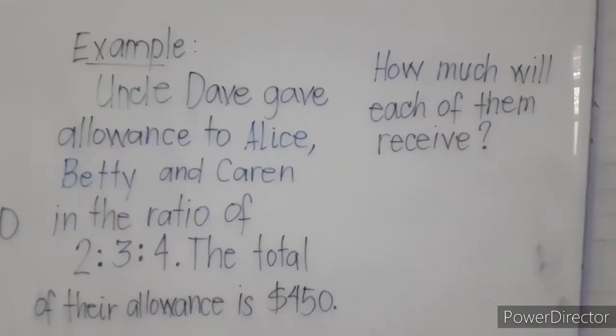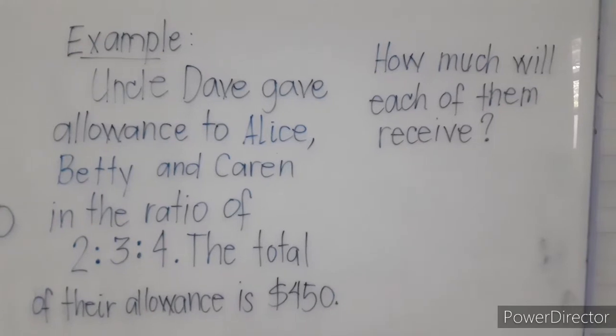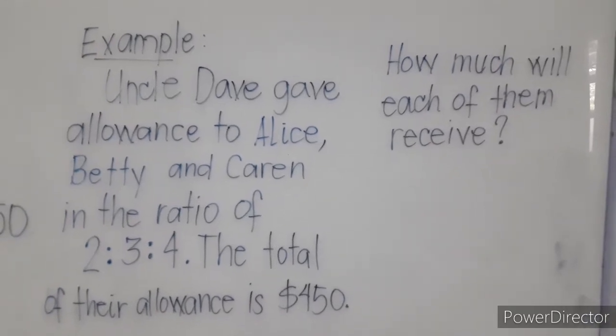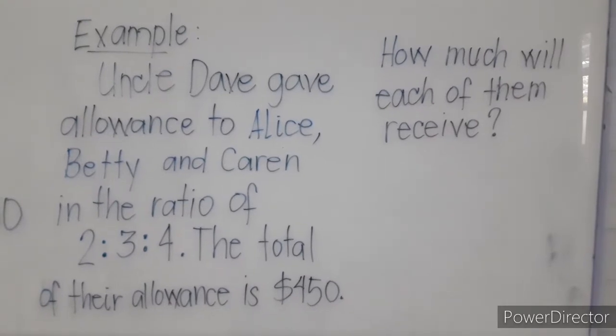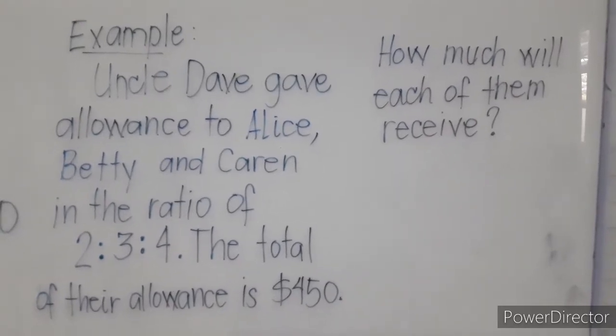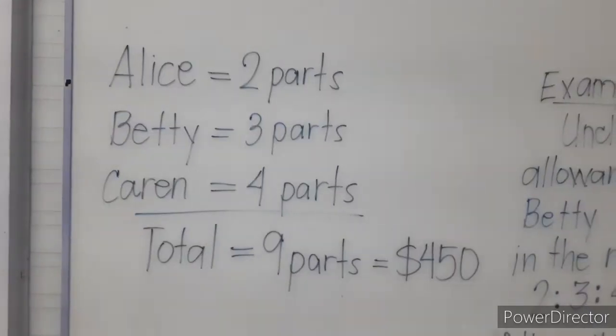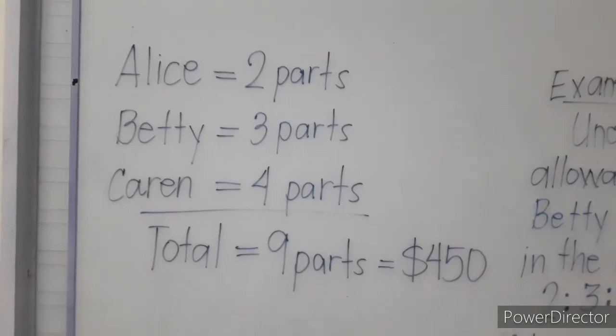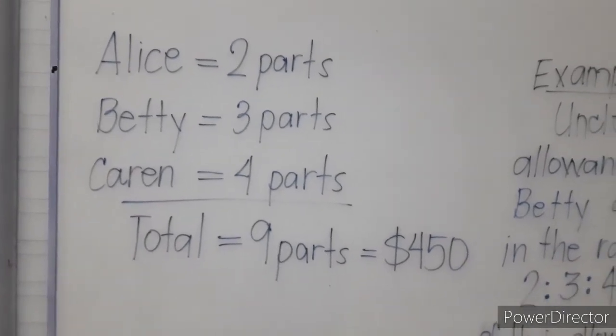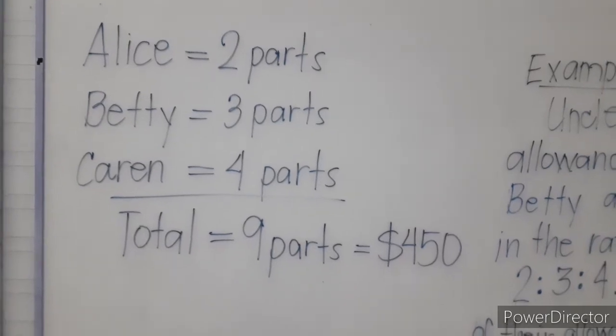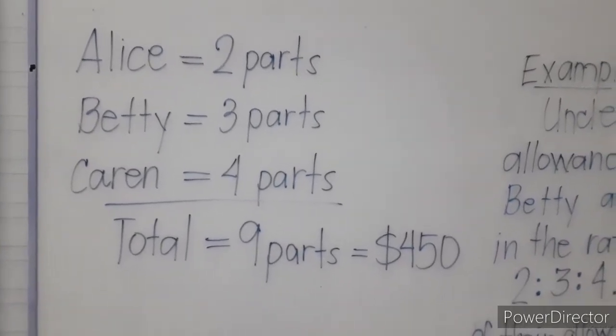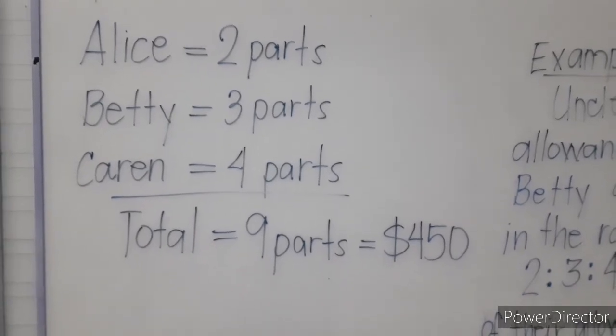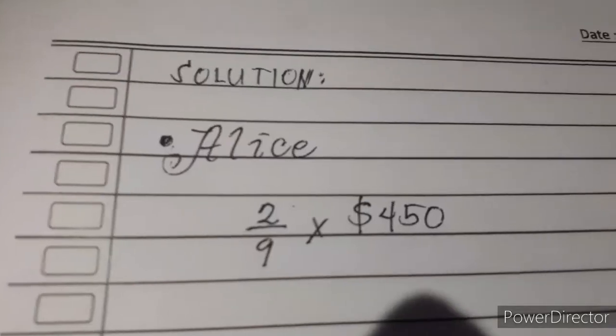Take note that in Partitive Proportion, the order of the given is important. Alice is mentioned first before Betty and Karen, and the ratio is 2:3:4. That means Alice takes 2 parts, Betty takes 3 parts, and Karen takes 4 parts. We have 9 parts in total, which is equivalent to $450.